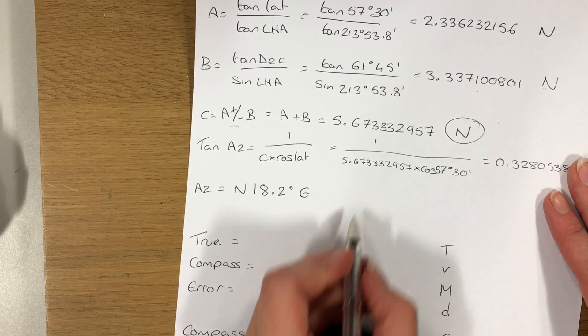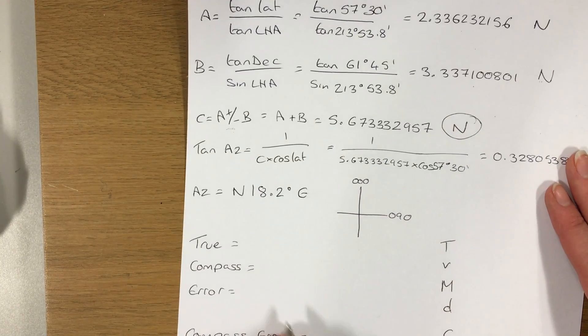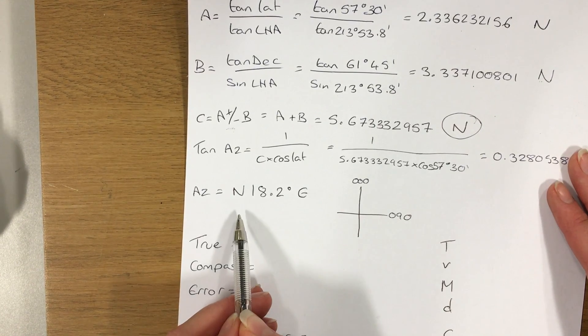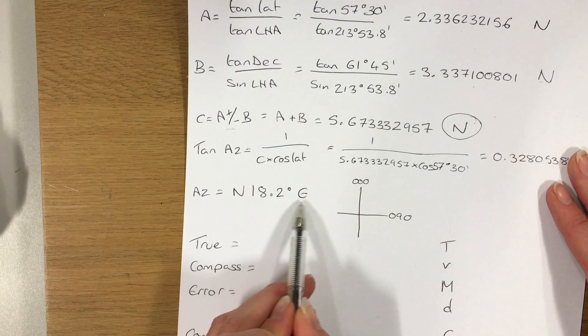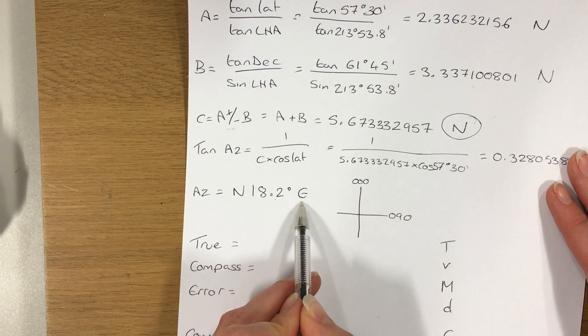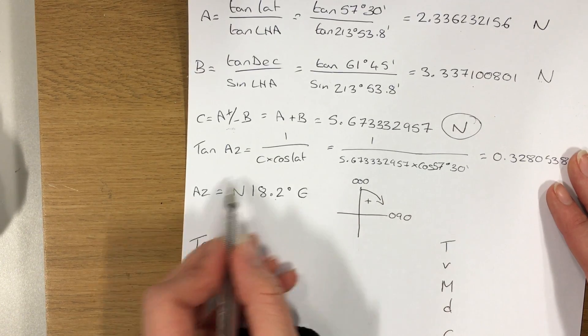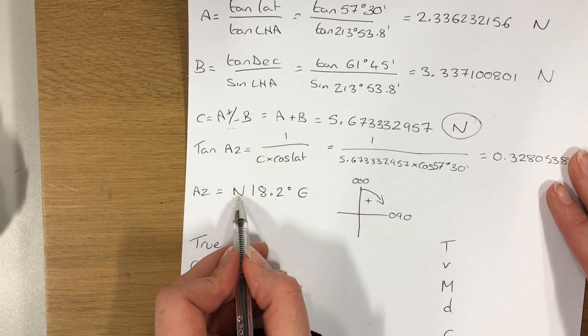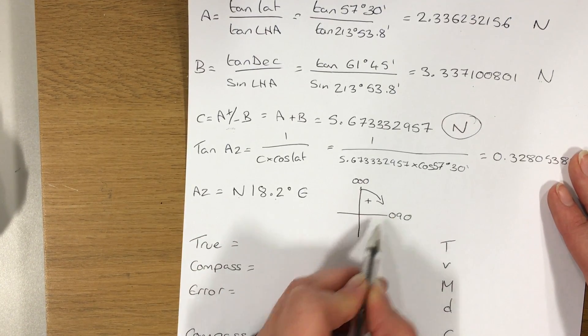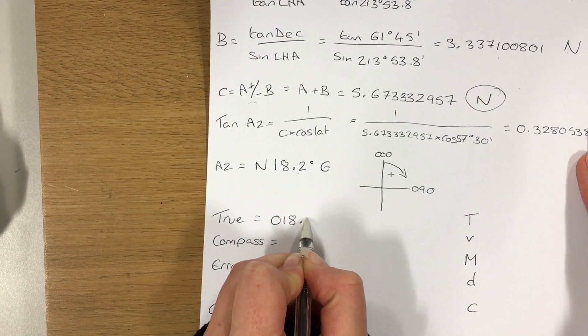So now I need to transform this into a true bearing. Now as we know, north is 000 on a compass and east is 090. So if I was following this like a set of instructions, I started at north and I went 18.2 degrees towards the east. My numbers are increasing as I move around, so that's what I'm going to do to find my azimuth. I'm going to do 0 plus 18.2 because the numbers increase.